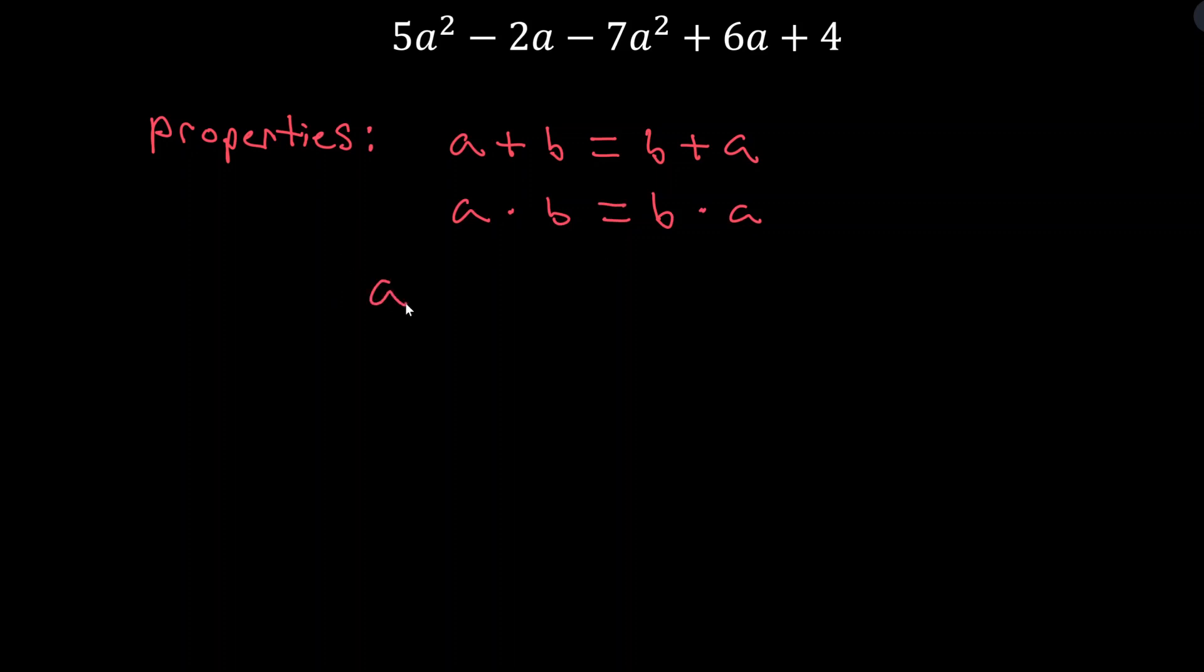We also have the associative property. This I sort of think of as regrouping. If we add a and b together and then add c, that gives us the same thing as adding b and c together first and then adding a to that result. We use commutative a lot more, but we definitely use the distributive property a lot. So this is when we're multiplying a number outside parentheses where there's a sum inside the parentheses, which equals a times b plus a times c. Distributive property, that's going to be really important.